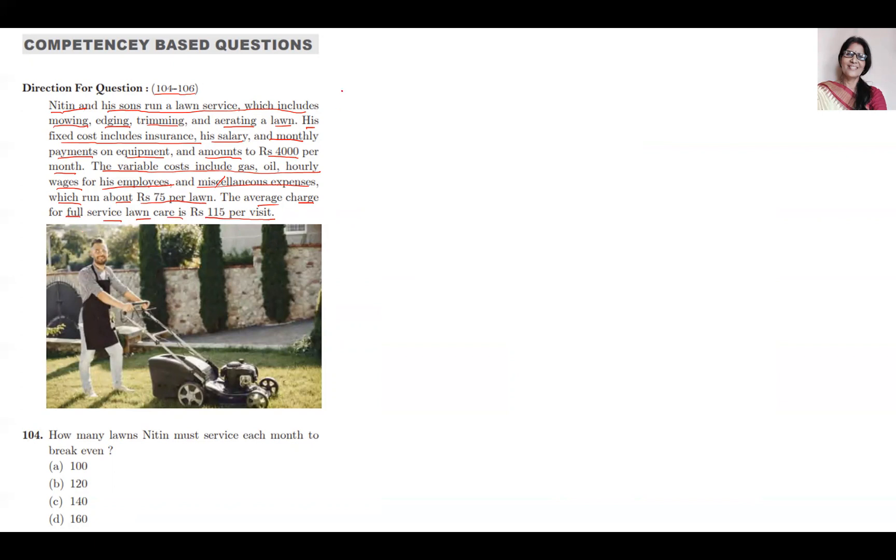Let me repeat this in Hindi because some of my subscribers want me to make this clear in Hindi for better understanding. Nitin is a person doing a business. What type of business? He maintains the lawns of others. That means gardening.